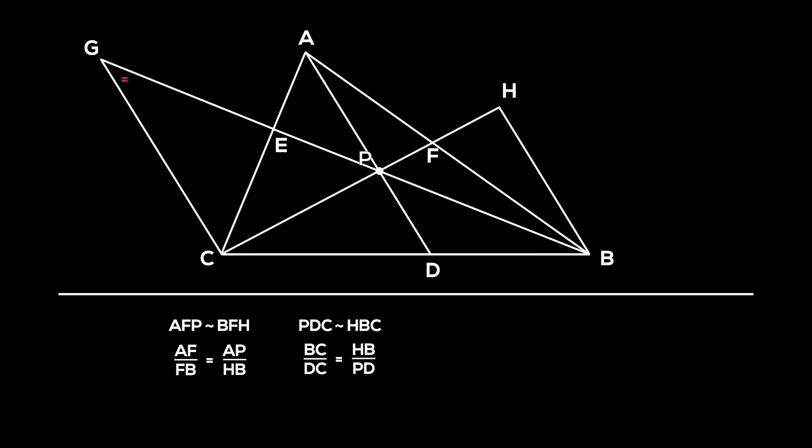Moving on, angles CGB and DPB are equal as they are corresponding angles, and angle GBC is equal to PBD. Thus, triangles PDB and GCB are similar. We get the ratio BD over BC is equal to PD over GC.